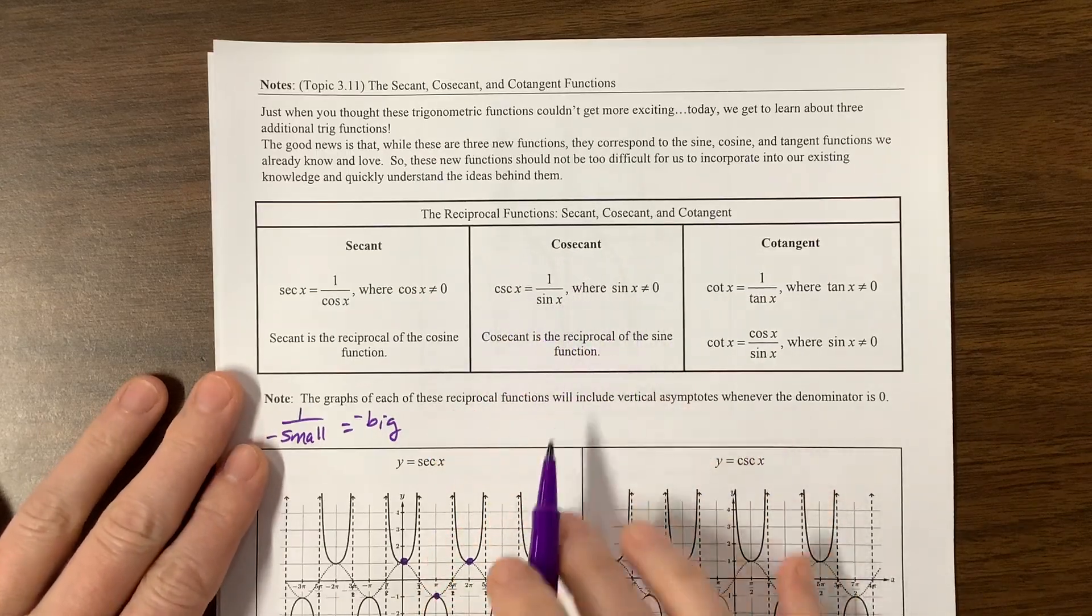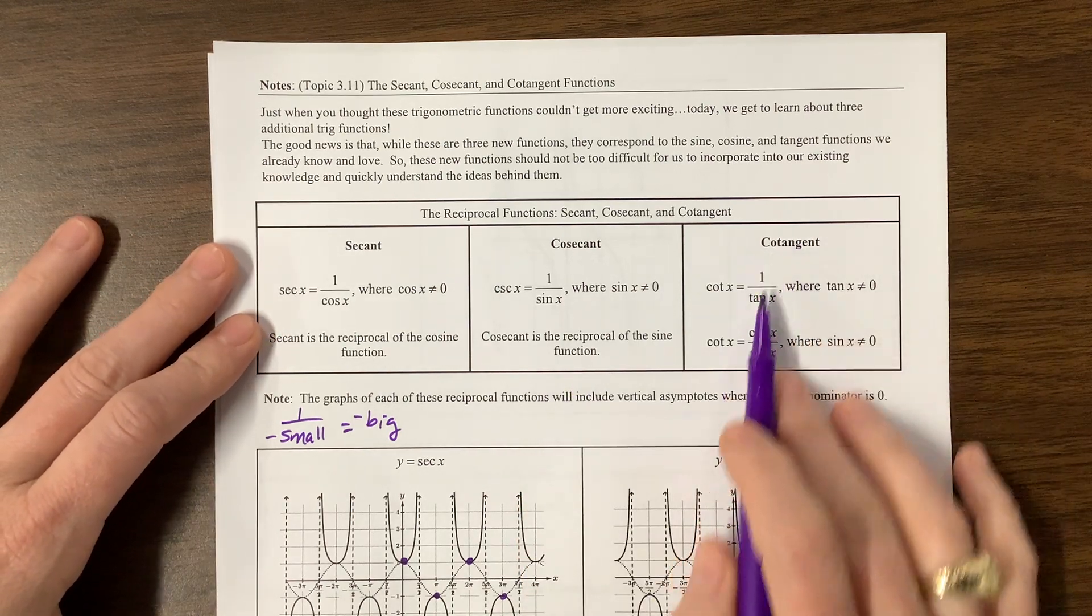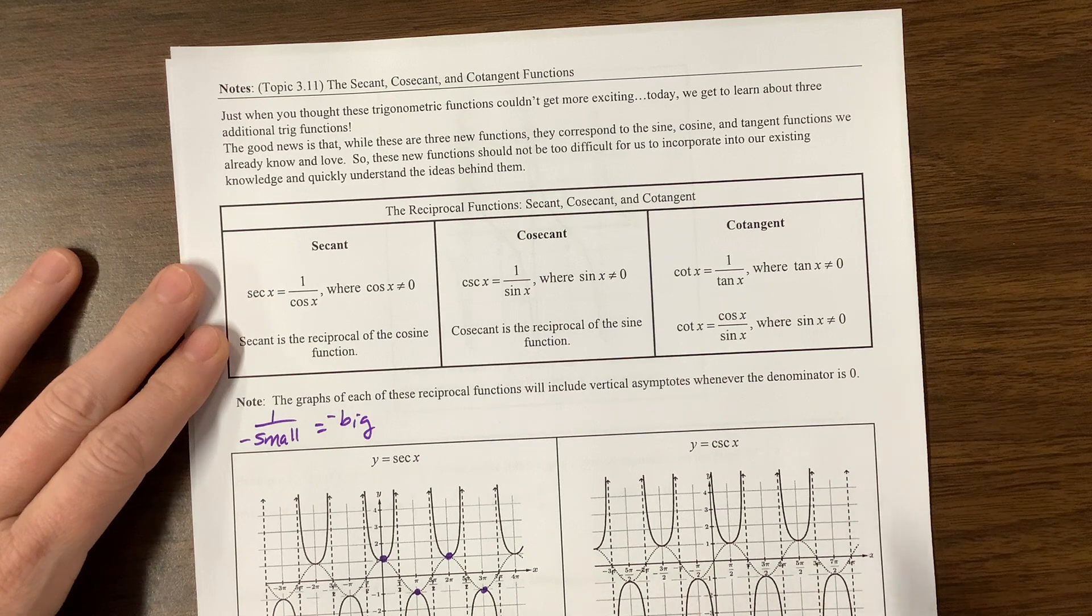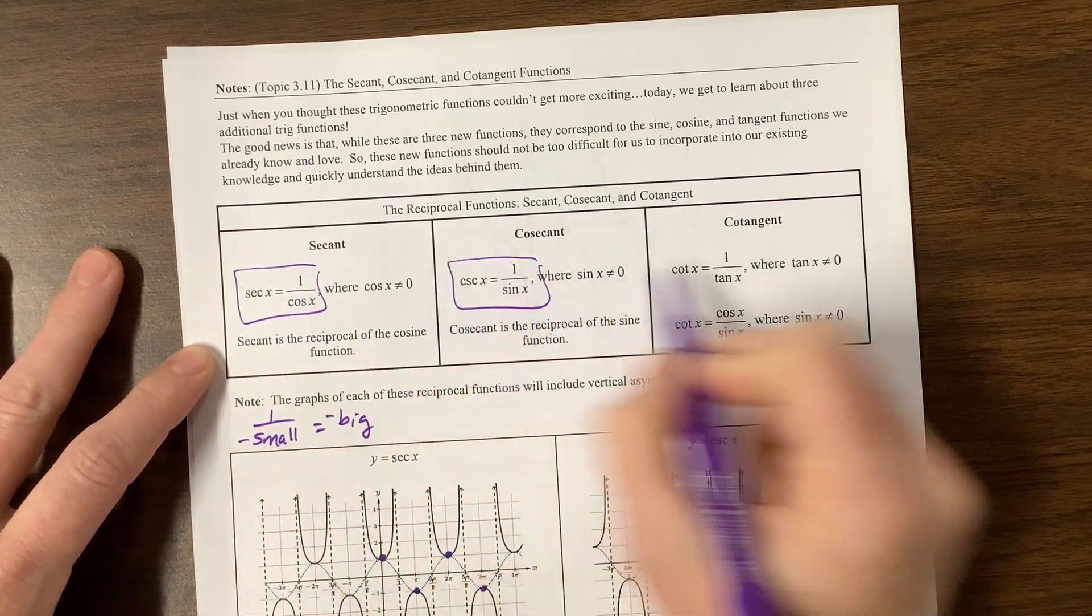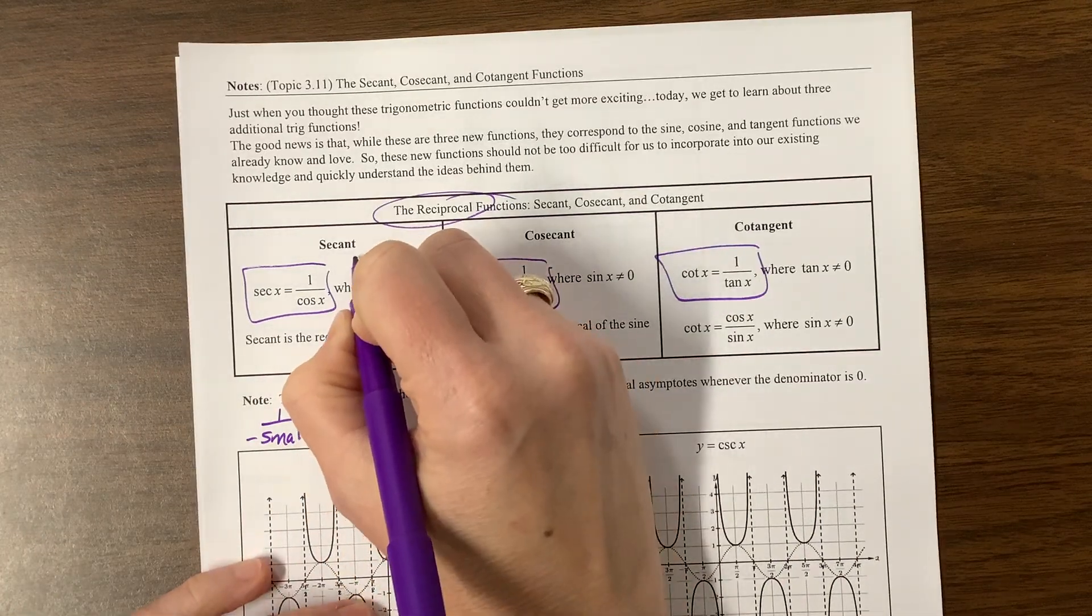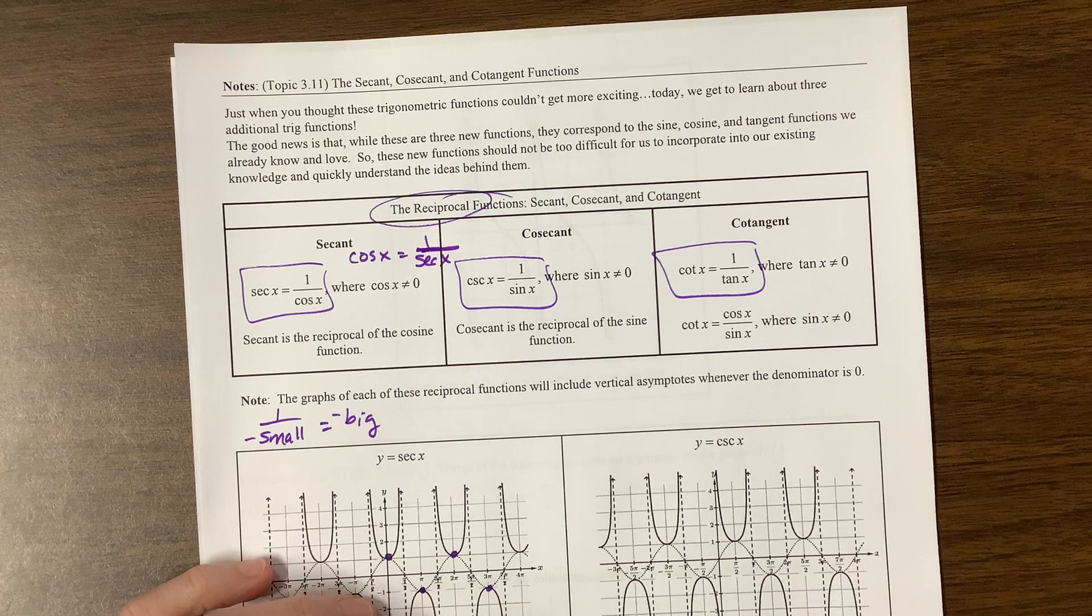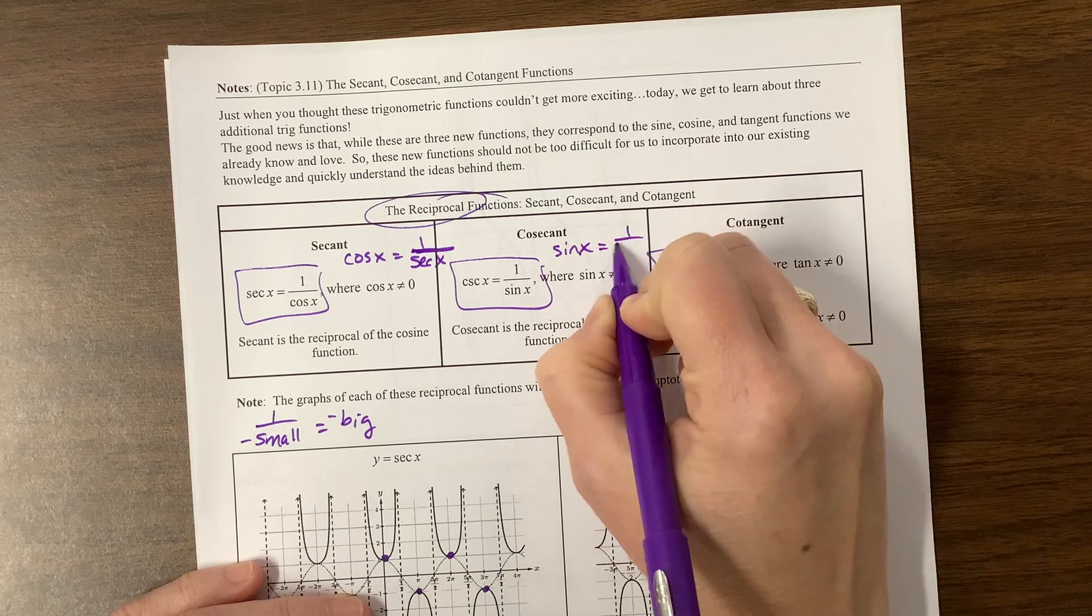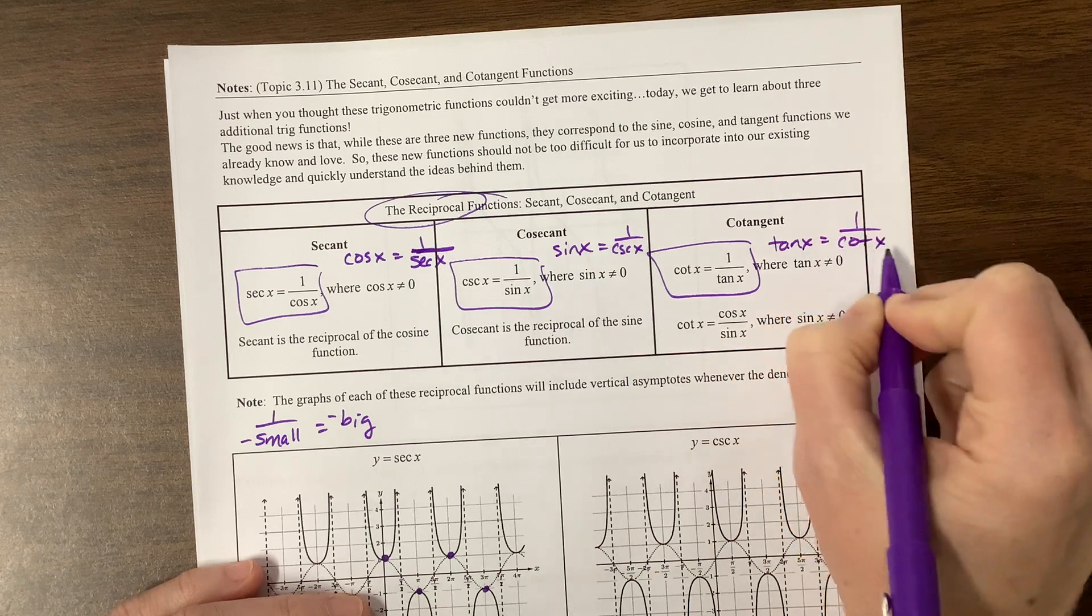Cosecant is one over sine, the reciprocal of the sine function. Cotangent is the reciprocal of tangent. So one over tangent of x will be equal to cotangent of x. They did not graph this one for us yet, but that's okay. These three are all reciprocal identities. You can also say that cosine of x is equal to one over secant of x, sine of x would also be equal to one over cosecant of x, and tangent of x would also be equal to one over cotangent of x.